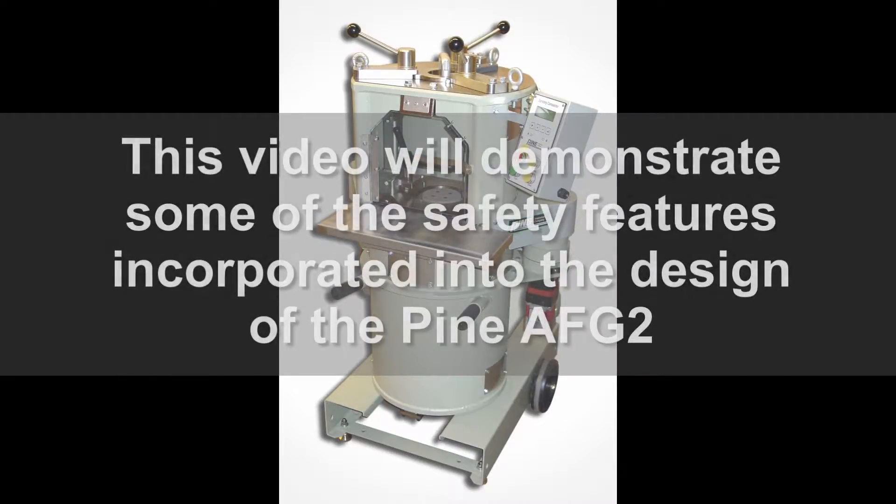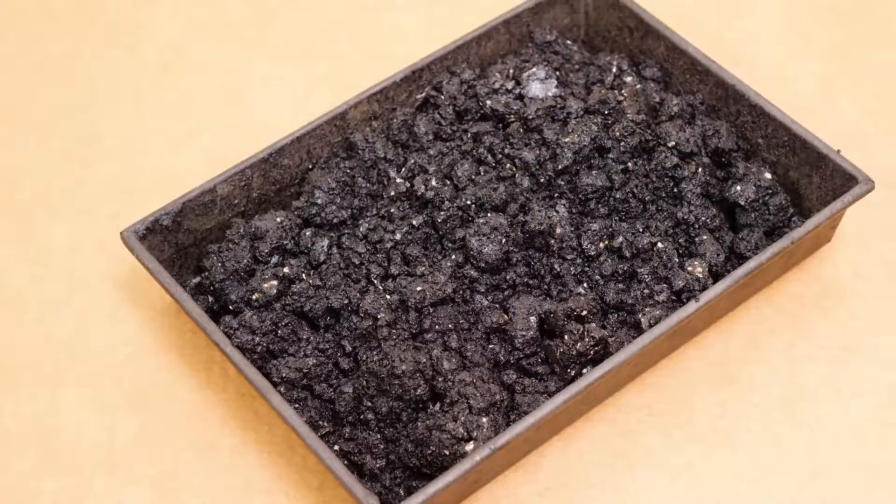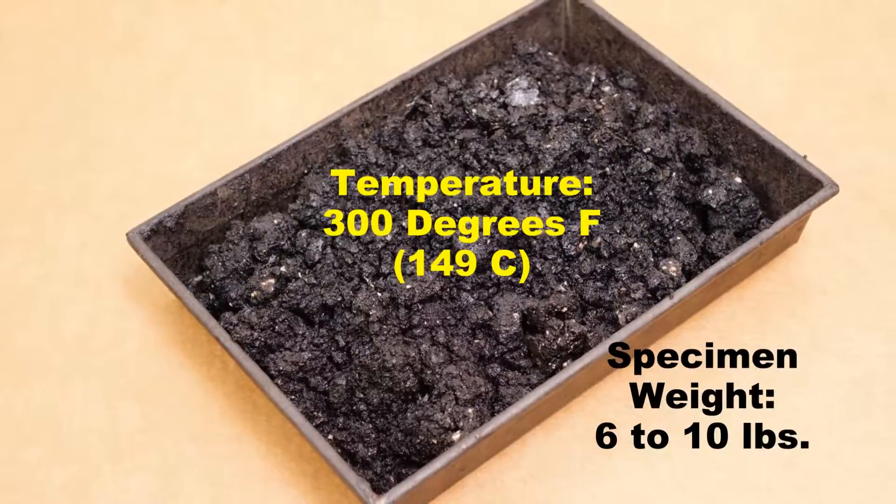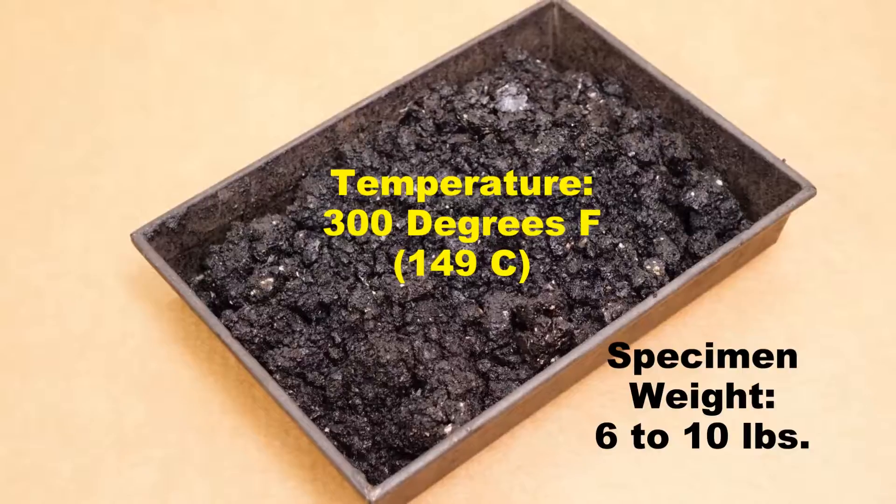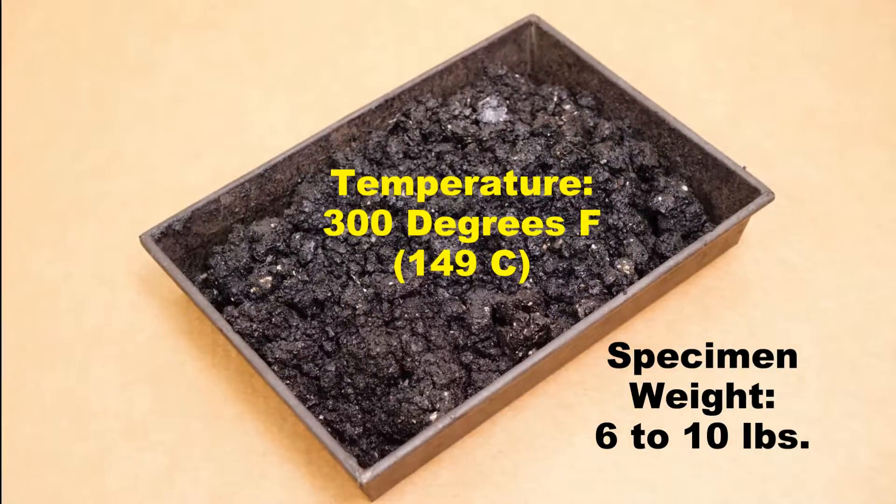This video will demonstrate some of the safety features incorporated into the design of the Pine AFG-2. To operate the machine, asphalt mixture is placed in an oven and heated to a temperature of approximately 300 degrees Fahrenheit. The mixture required to make a typical specimen weighs about 6 to 10 pounds.